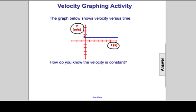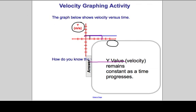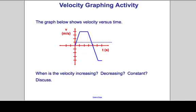We have speed values — small, larger, larger, and larger yet — as time increases. Let's look at the speed at some point in time. If we draw a line straight up and then go straight over, we get a speed. Looking at another time later, we end up with the same speed. So how do we know the velocity is constant? The y-value for velocity remains constant as time progresses.